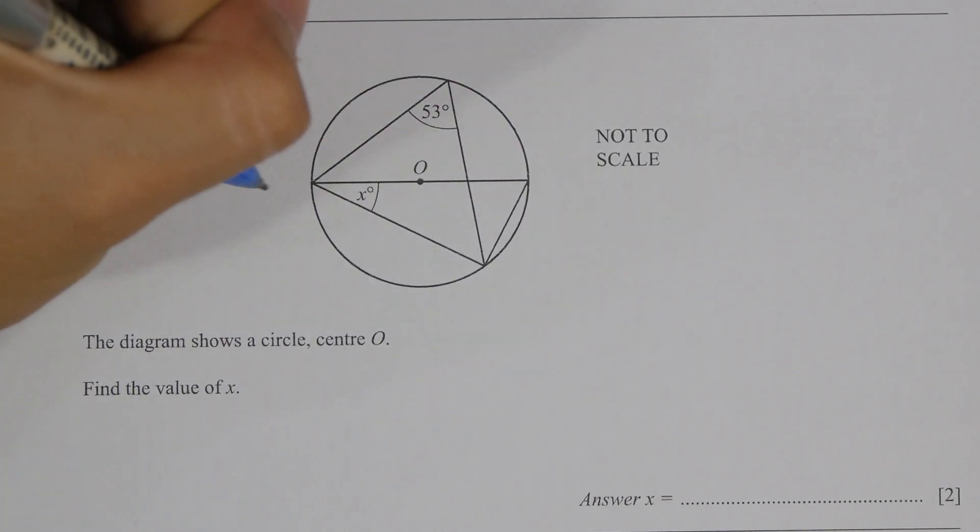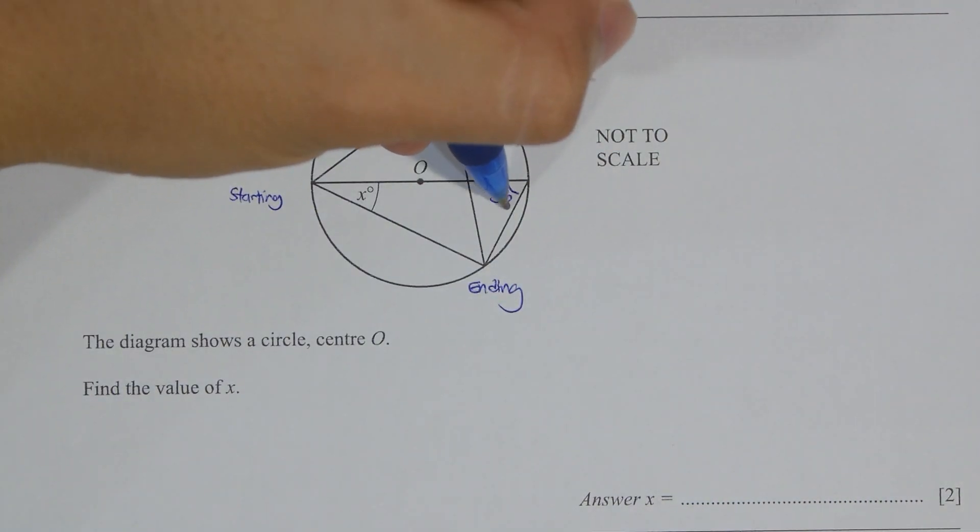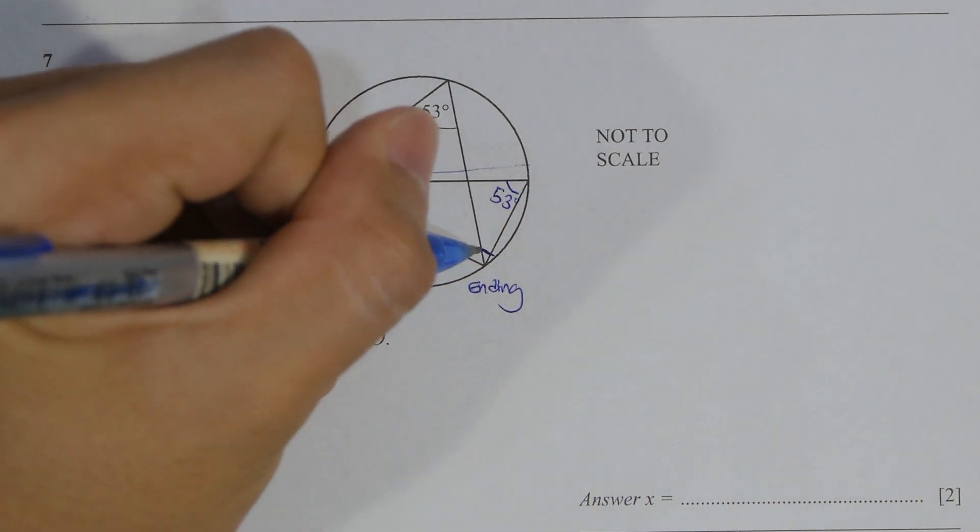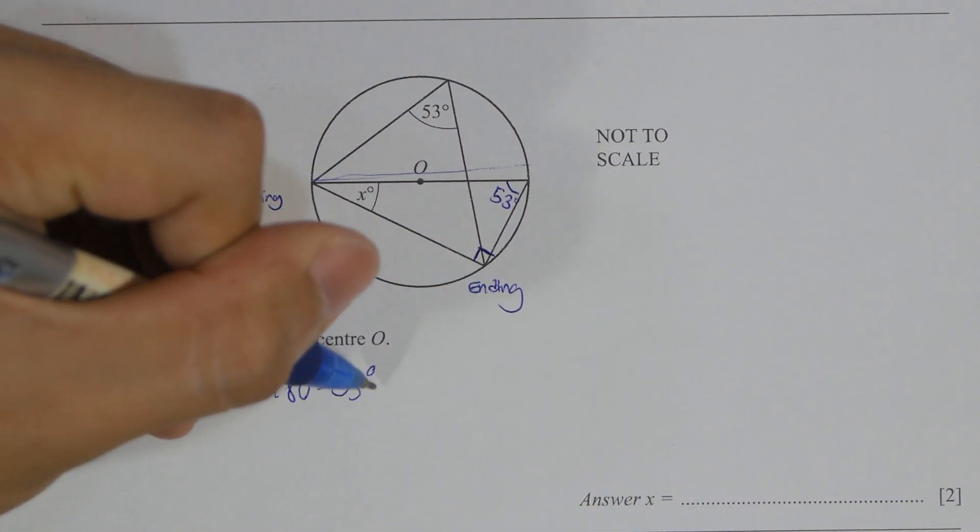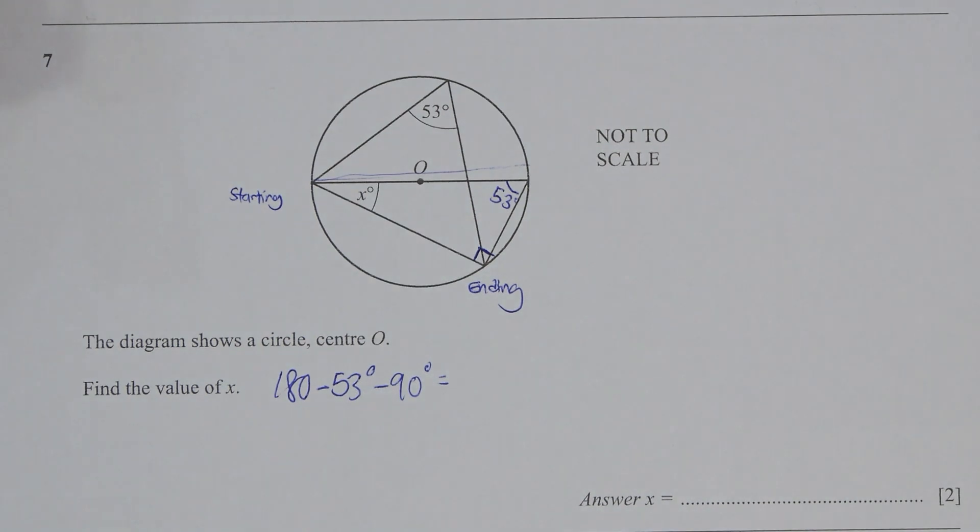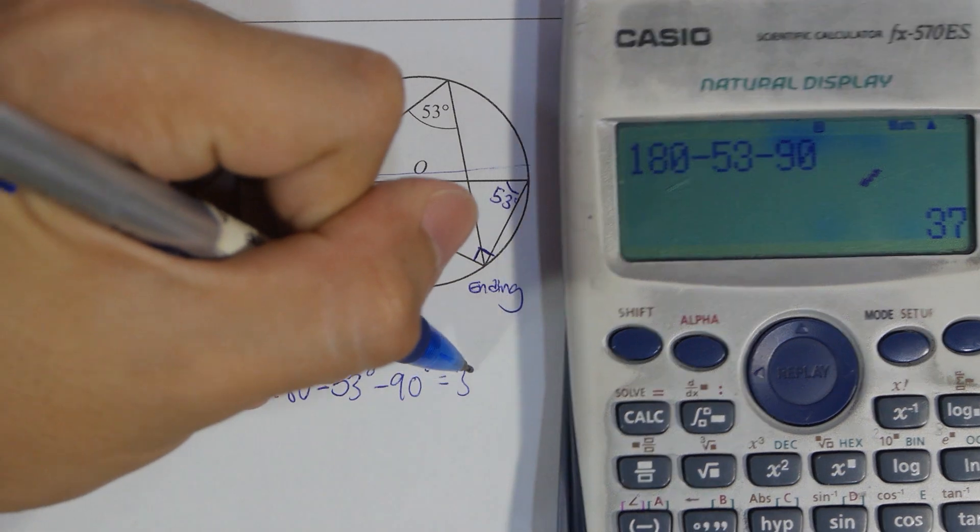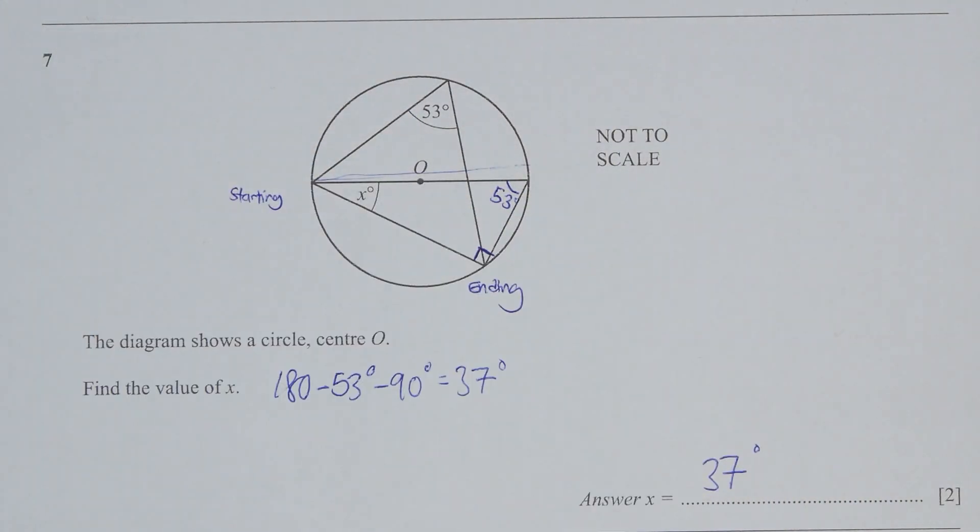53 degree, this concept is actually from angle from the same arc. There's a starting and ending point. How I identify the 90 degree is actually the diameter. Any angle that is from the diameter will be equivalent to 90 degree. To get x simply take 180 minus 53 minus 90, then you get the answer of 37.